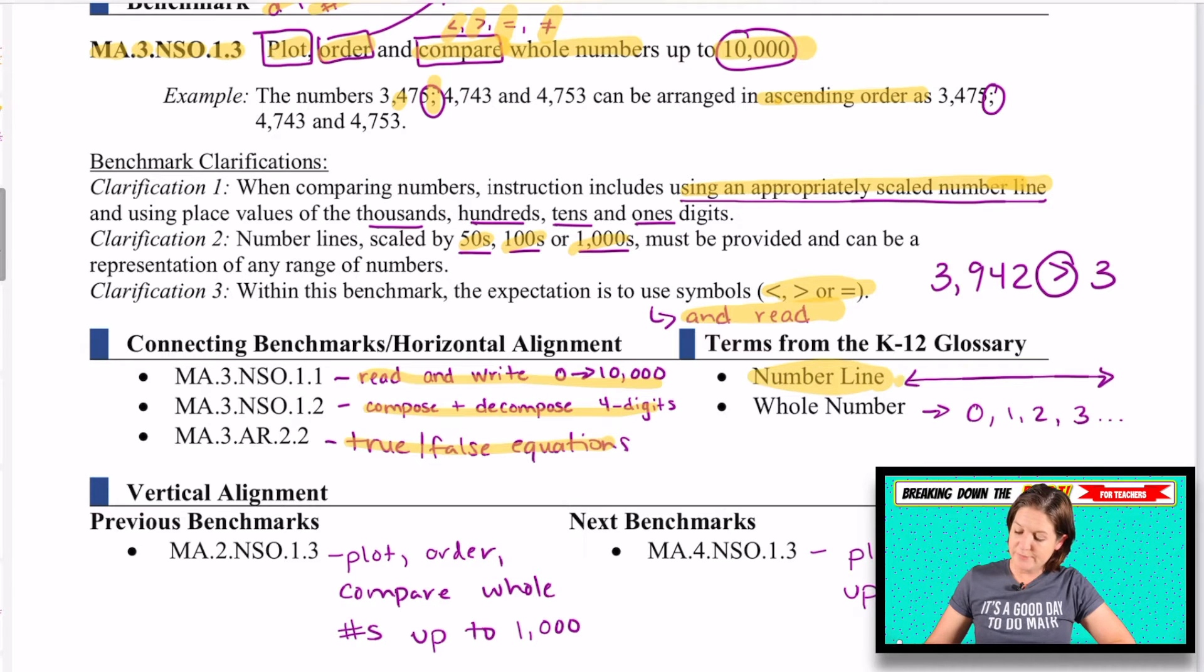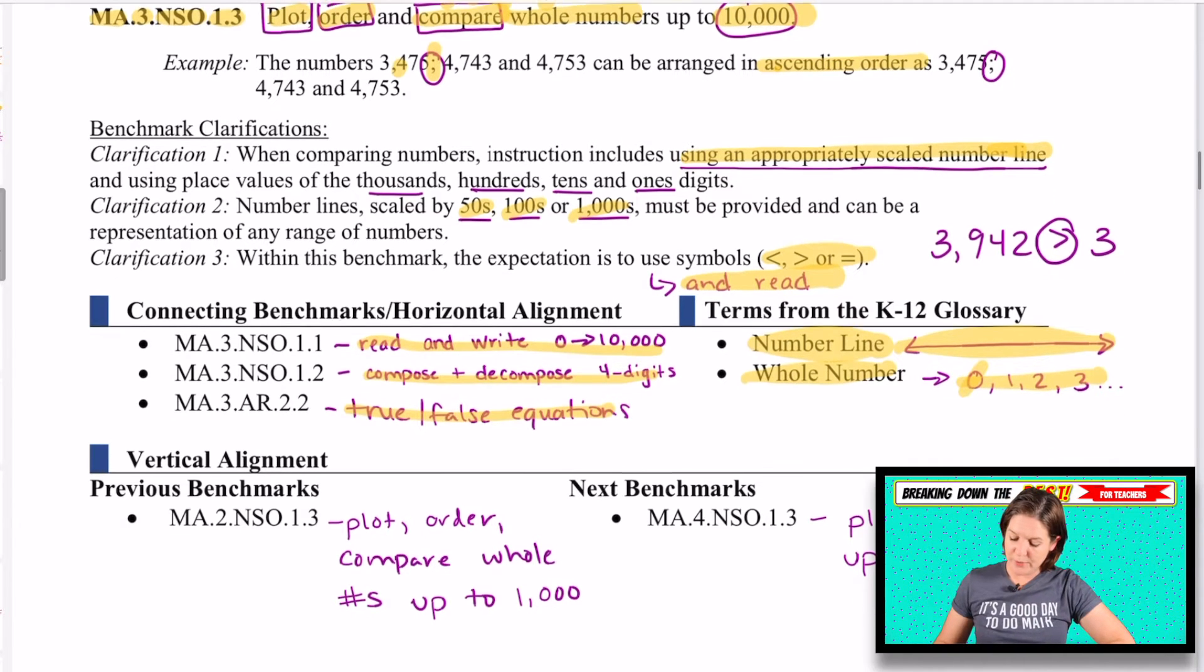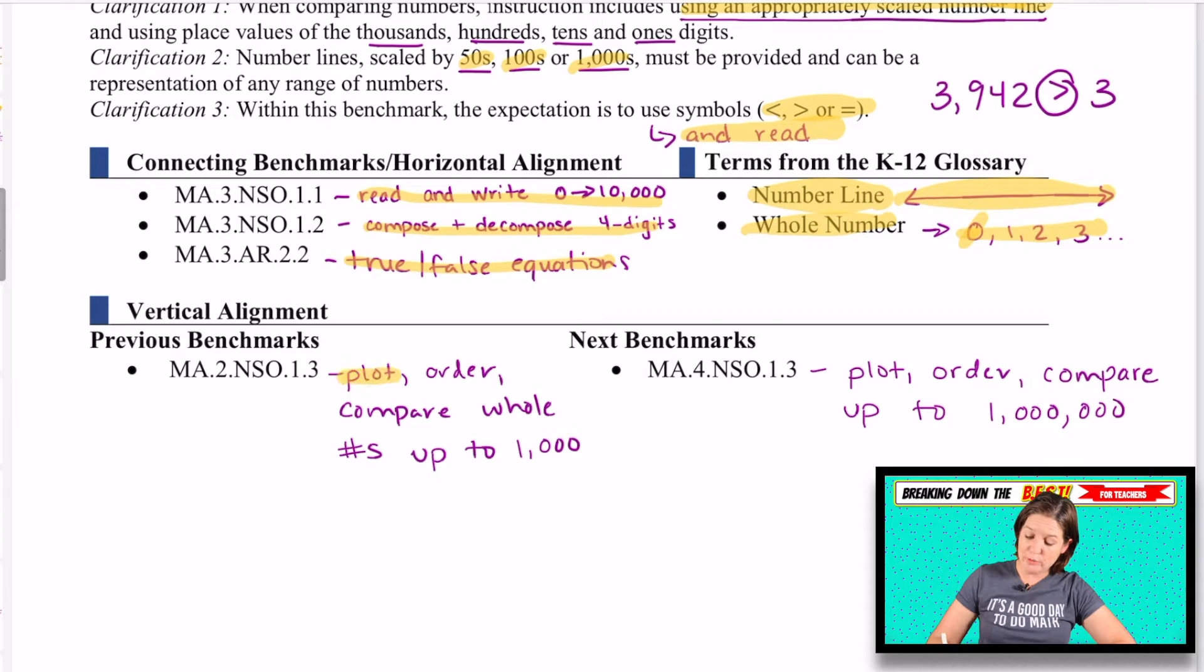Some terms, number line. And whole numbers are numbers from zero on that are whole numbers, no decimals, no fractions. Where are they coming from? Well, in second grade, they had to plot, order, and compare. But in second grade, they did it with whole numbers up to 1,000. And next year, they'll have to plot, order, and compare up to 1 million.